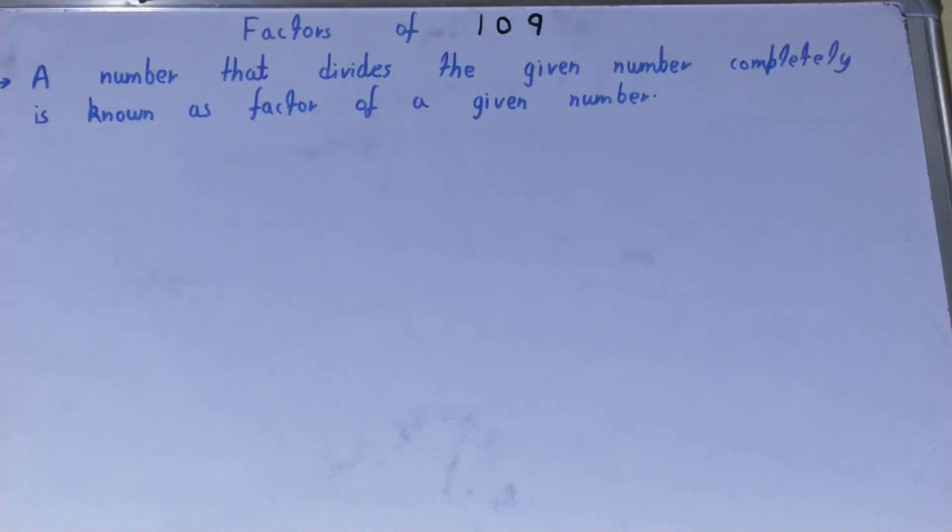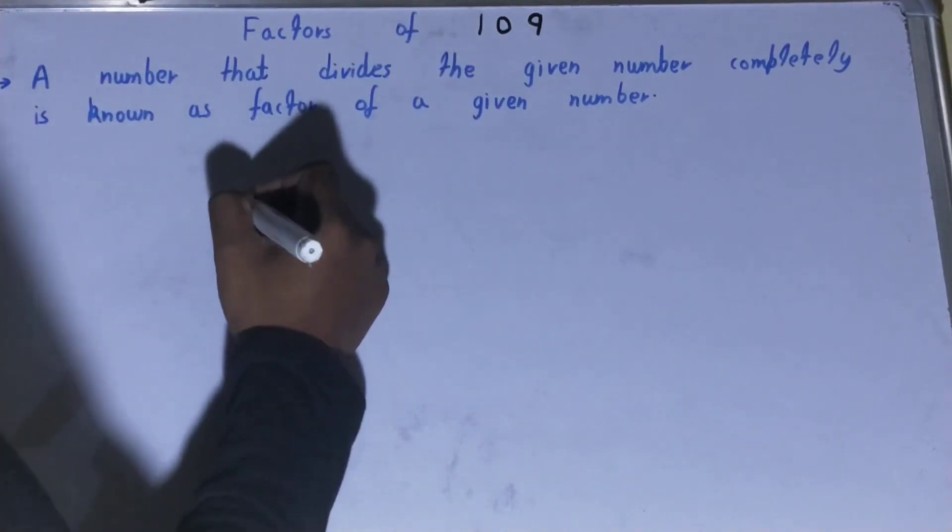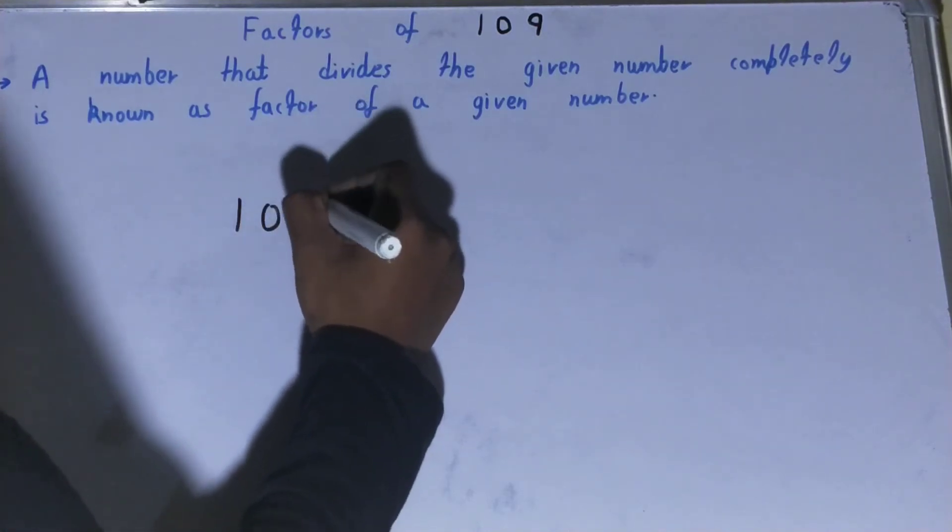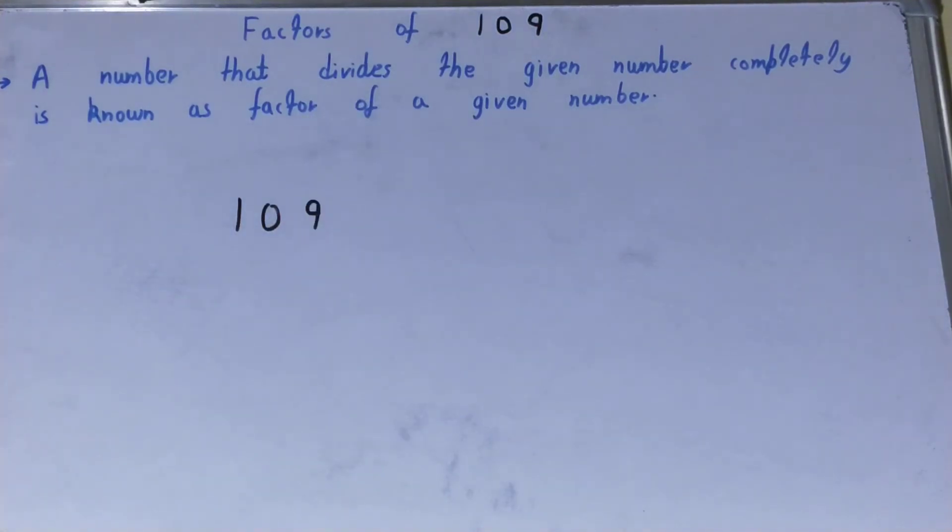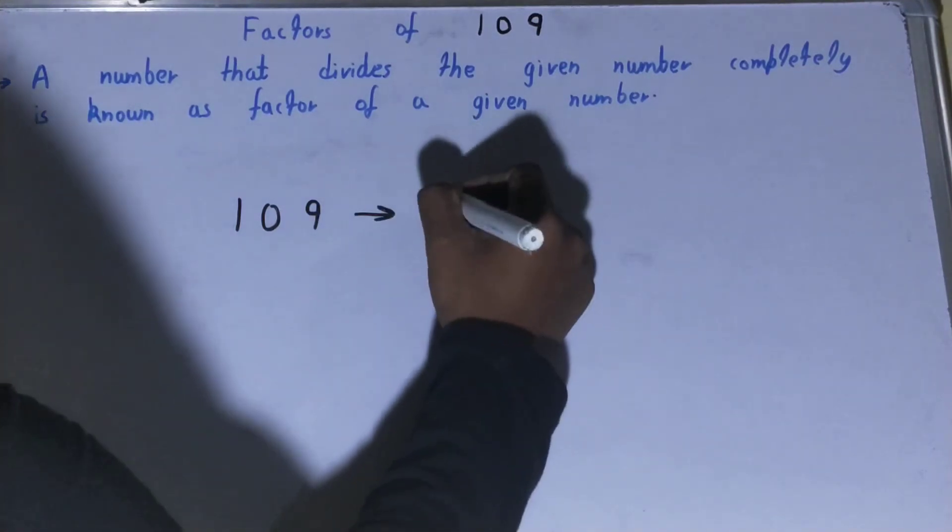Hello friends, and in this particular video I'll be helping you with the factors of the number 109. So let's start. We'll write 109 like this, and the first thing you need to check about the number is whether this number is a prime number or a composite number.